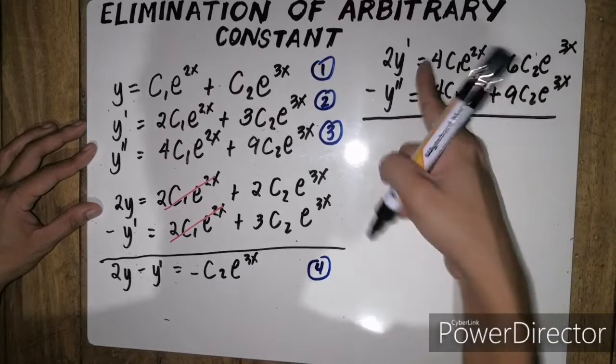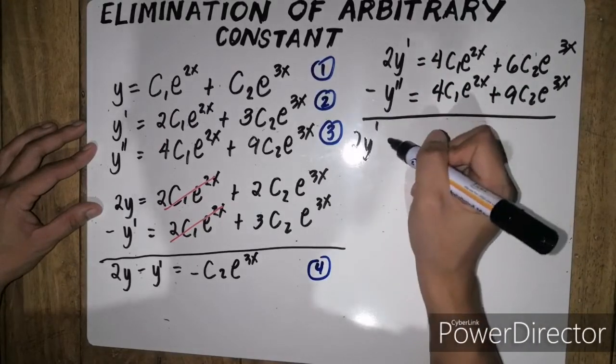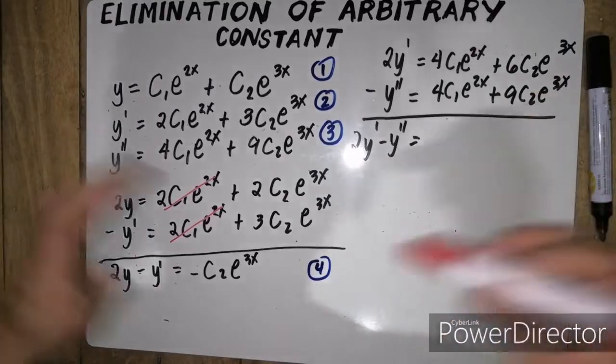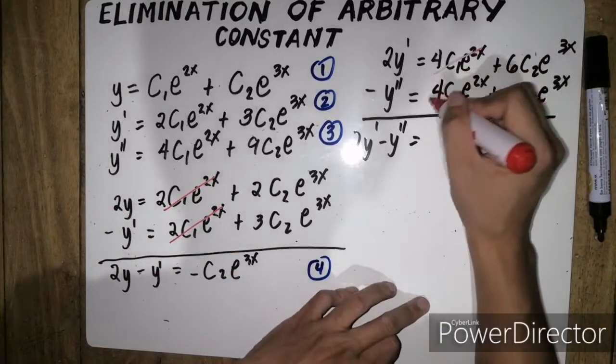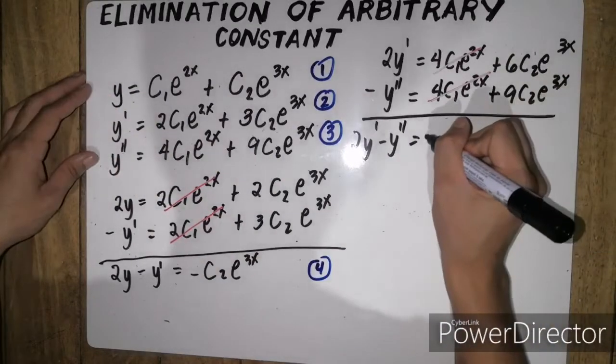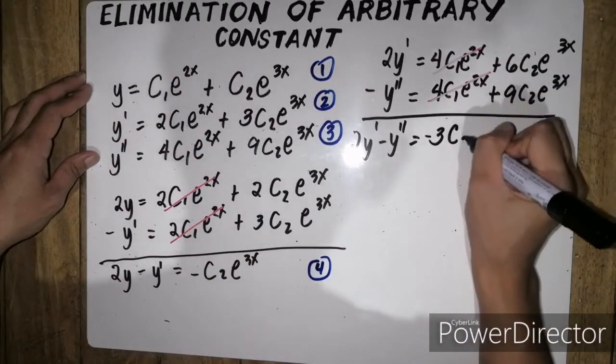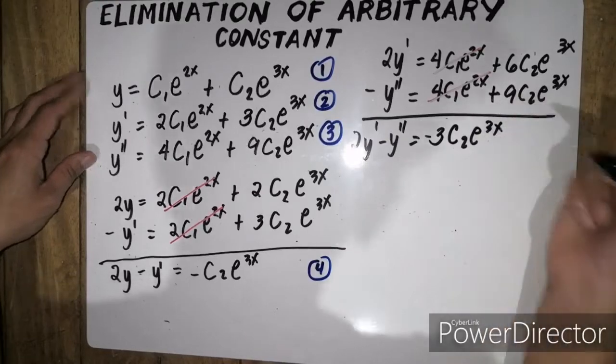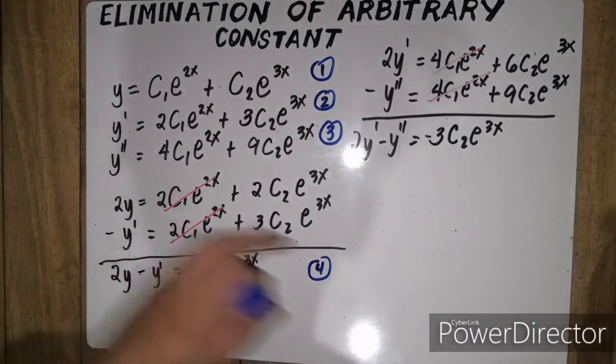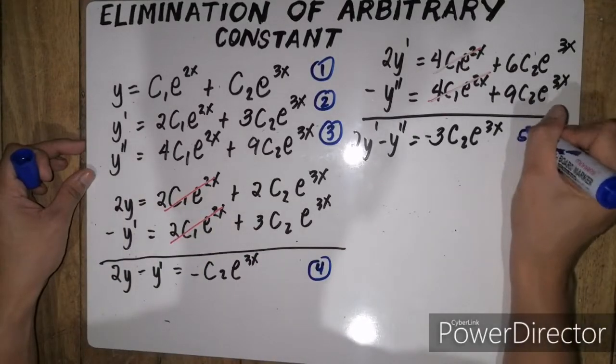Kasi kung ma-minusin natin ito, it will become 2y prime minus y double prime equals, cancel this out. So, 6 minus 9 is simply negative 3 c2e to the 3x. This will serve as our fifth equation.